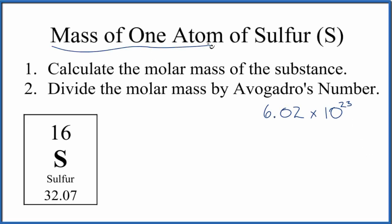Let's find the mass of one atom of sulfur, that's S. Really all we're going to do is take the molar mass for sulfur—actually it's the atomic mass because it's an atom, this is the average atomic mass.